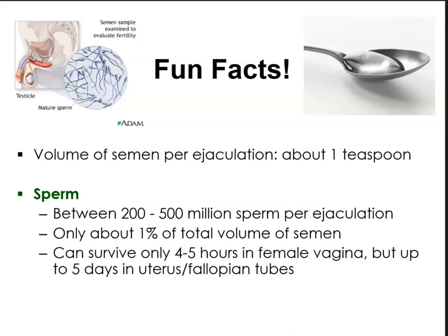Some fun facts about the male reproductive system: the volume of semen per ejaculation is about one teaspoon, and there are anywhere between 200 to 500 million sperm per ejaculation. Sperm only make up about 1% of the total semen volume. Sperm can survive about 4 to 5 hours in the female vagina, but can survive up to 5 days in the uterine or fallopian tubes — so ladies, take that into account when counting your days.